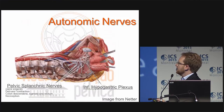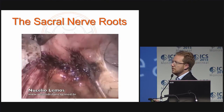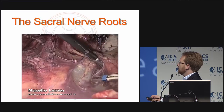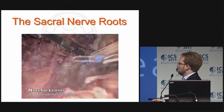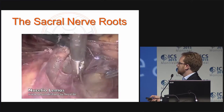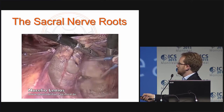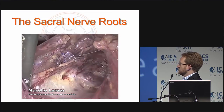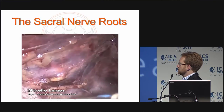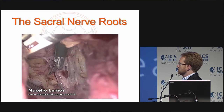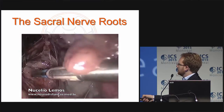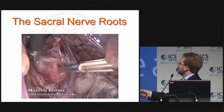Through laparoscopy, we can also dissect the pelvic splanchnic nerves and the inferior hypogastric plexus. This is an endometriosis surgery — I'm only dissecting those nerves to preserve them, demonstrating normal anatomy. I'm opening the pre-sacral fascia, dissecting the pre-sacral space down to the coccyx, then opening the hypogastric fascia laterally. On top of the piriformis muscle we can find the sacral nerve roots and the splanchnic nerves coming out of them.